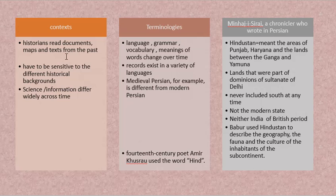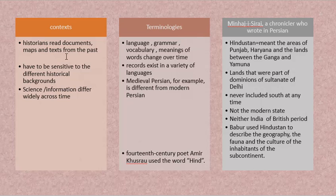Going back to the word 'Hindustan' — it meant large areas of land covering Punjab, Haryana, or the land between the Ganga and Yamuna, when the chronicler Minhaj-i-Siraj wrote in Persian. A chronicler is one who notes down events in chronological order — a record keeper of the present. Minhaj-i-Siraj used the word 'Hindustan' to mean the areas between the Ganga and Yamuna. Today, when you say Hindustan, you refer mostly to the Indian subcontinent, the Republic of India.